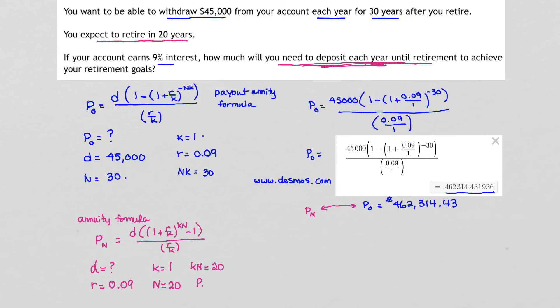KN then is K times N, or 1 times 20, which is 20. And P sub N, the future amount that we want to have in our retirement account, is going to be that amount that we found by using the payout annuity at the beginning. This is the amount that we need upon retirement. I'm actually going to round it up to $462,314.44. The reason I'm going to round it up is because the money I needed in my account was slightly more than $0.43, so I'd rather be safe than sorry.